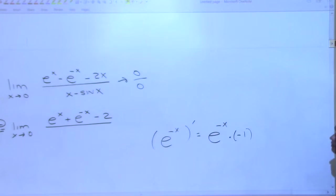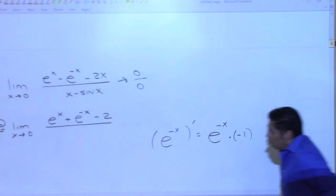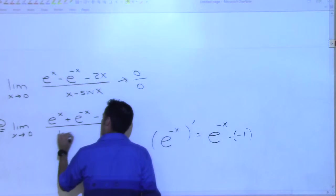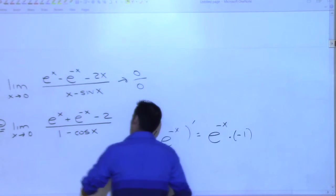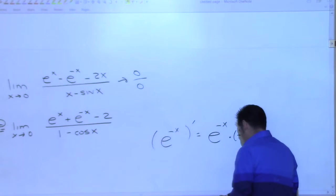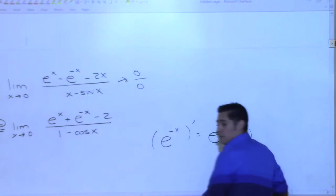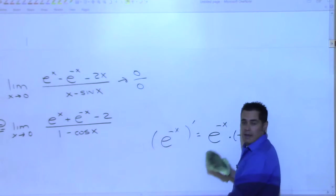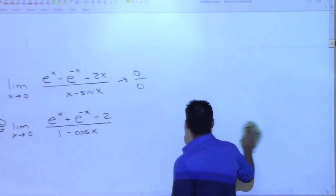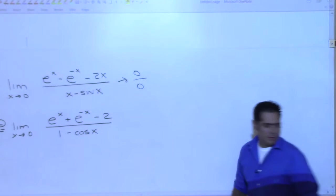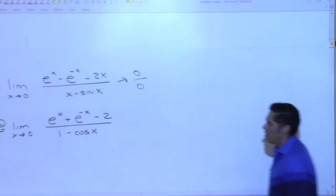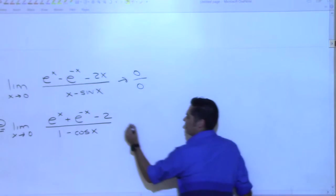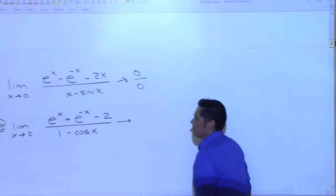One minus cosine of x? Okay, good. Now, Emily? Emily, you get to do the limit now. So let's see — what do we get on top, Emily, when we take the limit as x goes to zero?